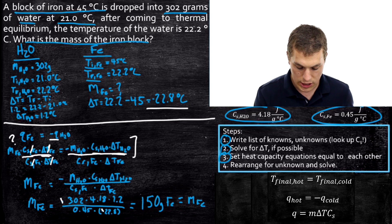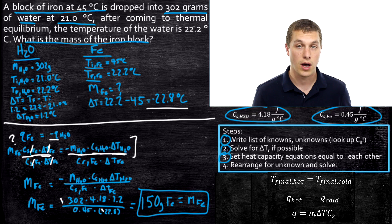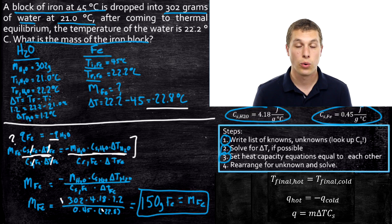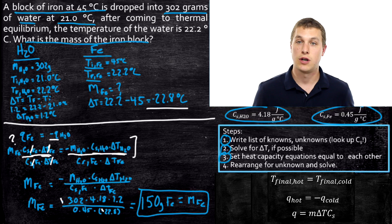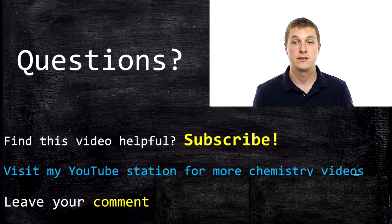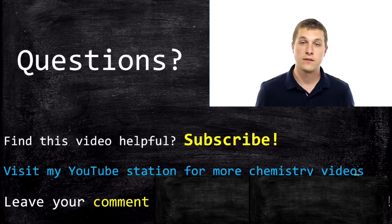We've used thermal equilibrium and the heat capacity equation to solve for the mass of an iron block placed into water. Basically, if you put two objects in contact and record the temperature changes, you can calculate the mass of one of those objects. There are all sorts of problems you can solve with thermal equilibrium equations — this is just one example. If you still have questions or slight variations on these problems, please ask them below. If you enjoyed this video, go ahead and subscribe to Real Chemistry. Thanks for watching.